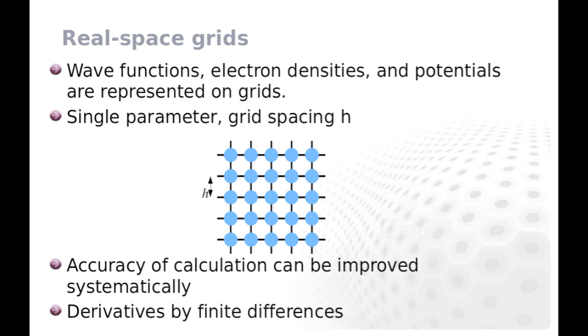Derivatives such as the Laplacian in kinetic energy and in Poisson equation are evaluated numerically by finite differences. Real-space grids enable flexible boundary conditions which can be periodic or finite in any three dimensions. Parallelization can be done very efficiently with domain decomposition as only nearest neighbor communication is needed.